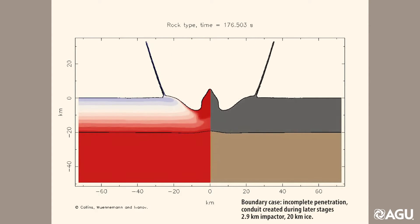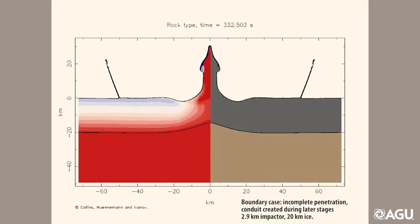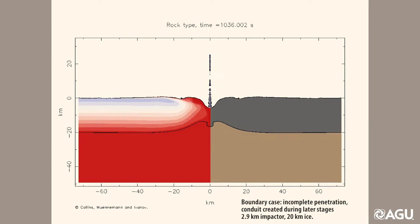In the second simulation, a 2.9 kilometer impactor hits 20 kilometer thick ice. The transient cavity here is almost 18 kilometers deep, less than the ice depth, so the impact does not penetrate to the ocean.